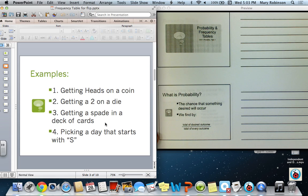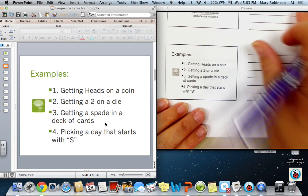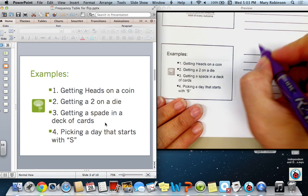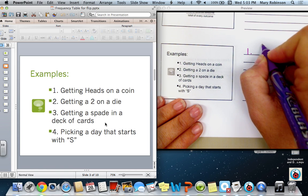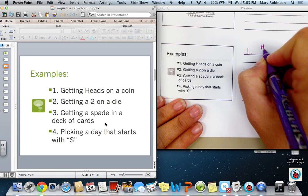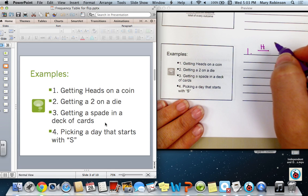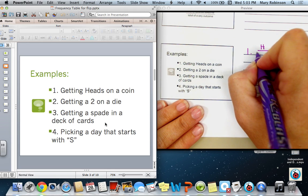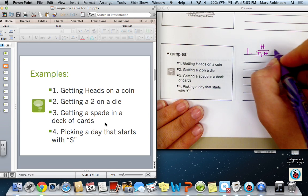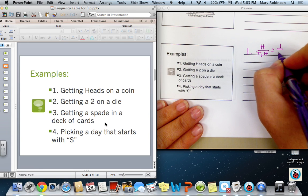For example, getting heads on a coin. If we want to find the probability of getting heads on a coin, the desired outcome would be getting heads. The total number of possible outcomes are tails and heads, so therefore one out of two.